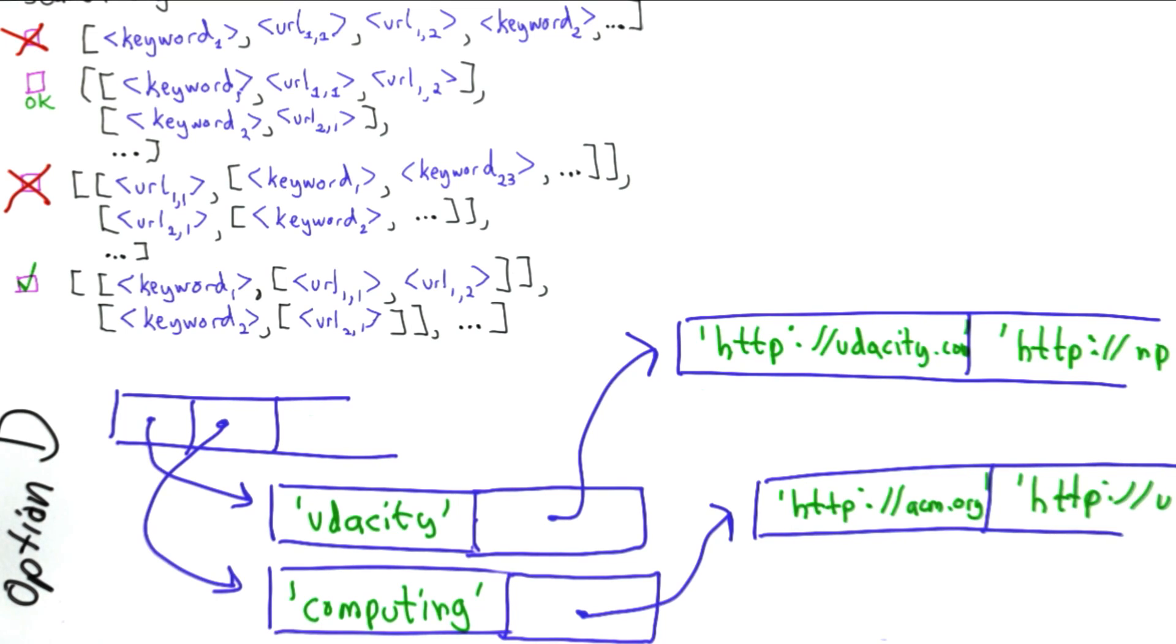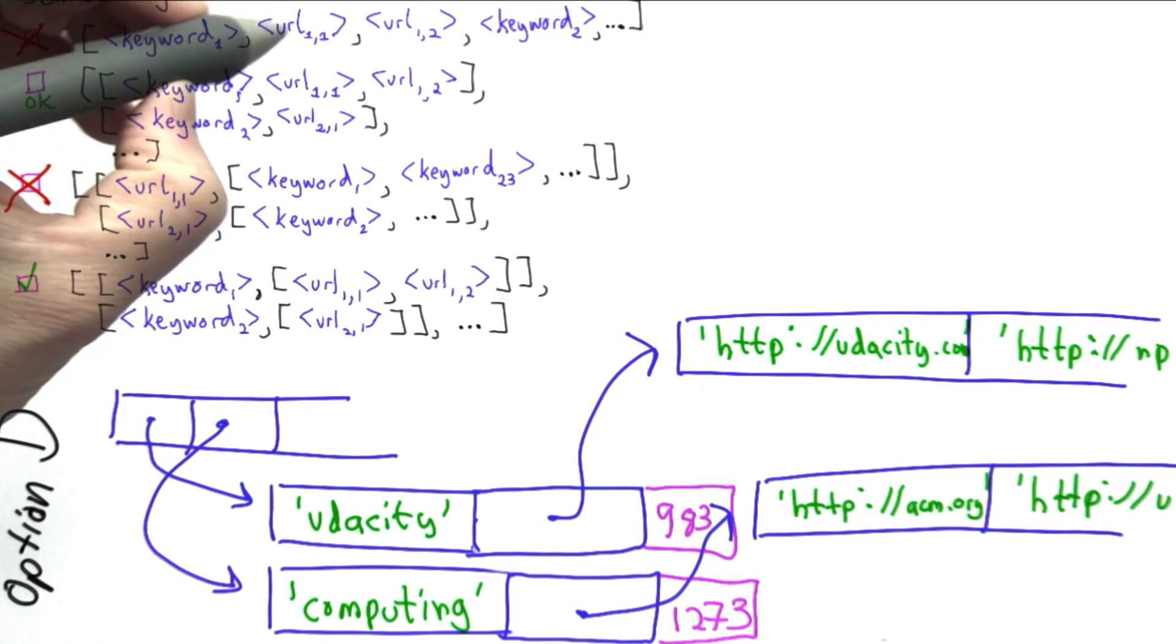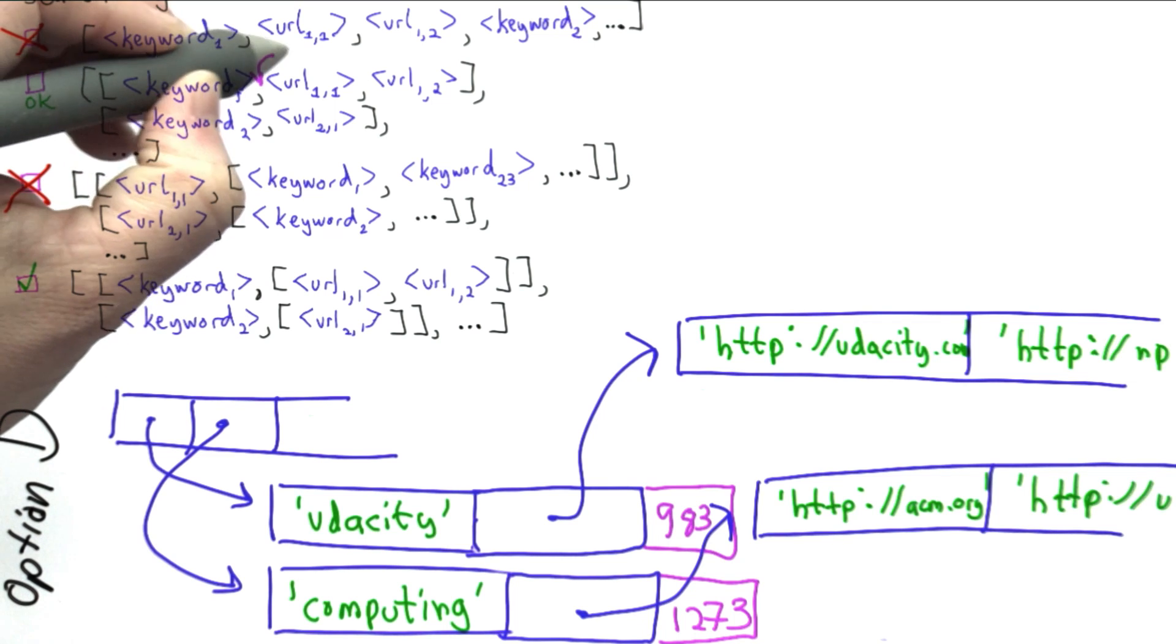It means if we decide we want to keep track of something else, say we want to keep track of the number of times someone searches for each keyword, we could easily do that. We could have an extra element here that keeps track of the number of times someone searches for something. With option B, it wouldn't be that clear how to do that. Maybe we could add an extra value in here. We could add a number in here.